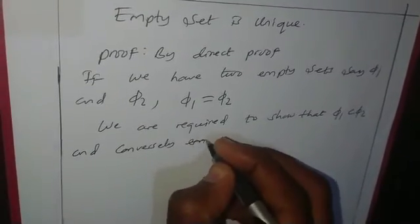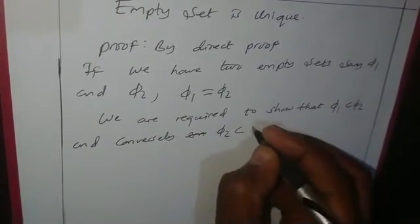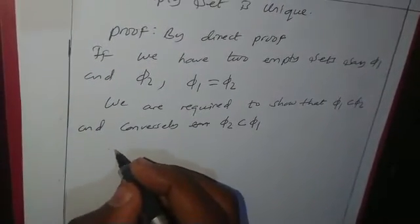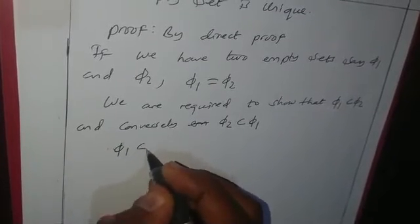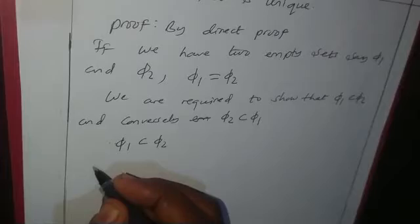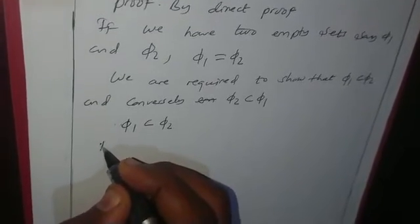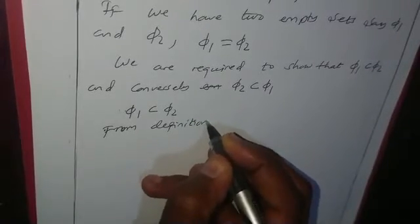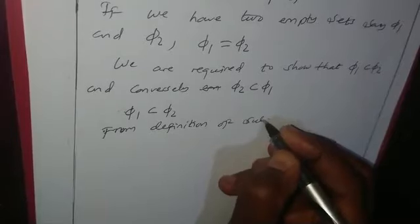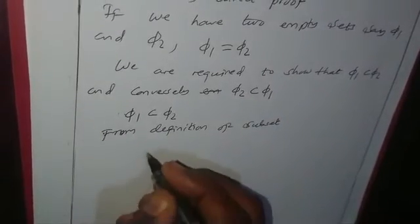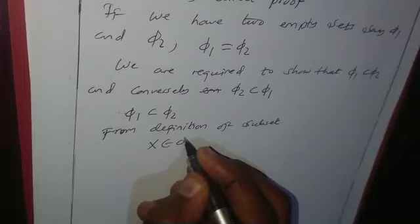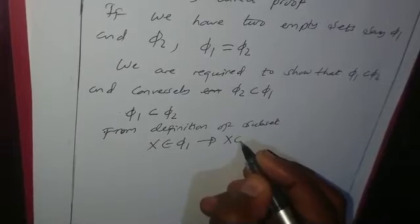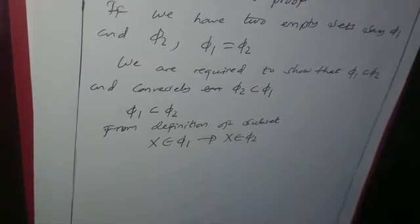empty set two is a subset of empty set one. Let us prove that empty set one is a subset of empty set two. From the definition of subset, if X is an element of empty set one, then X must also be an element of empty set two.